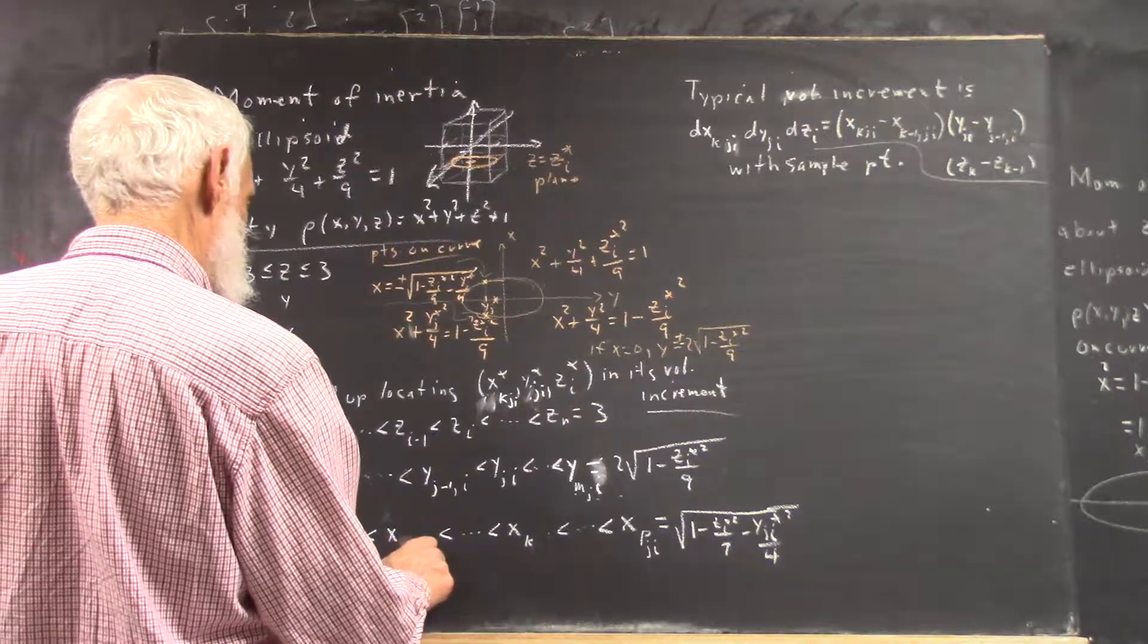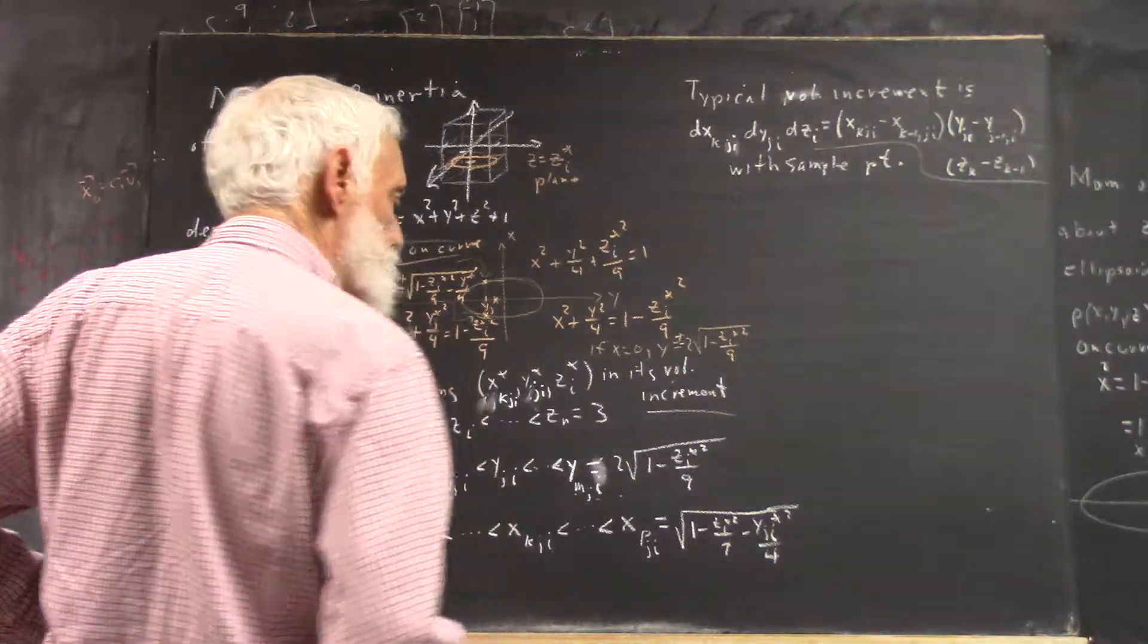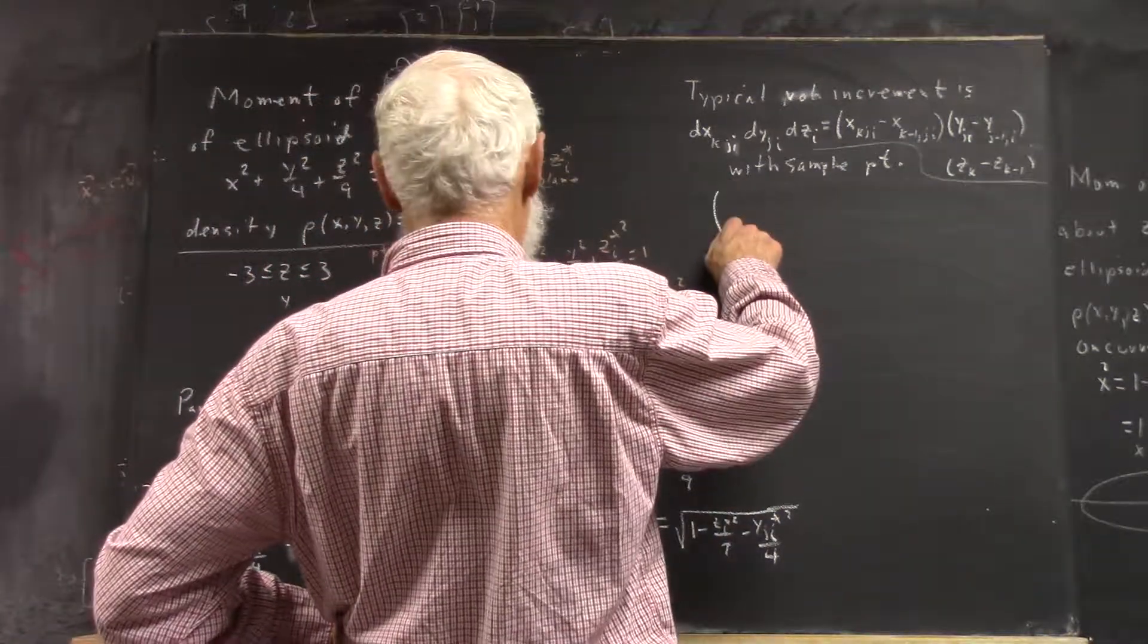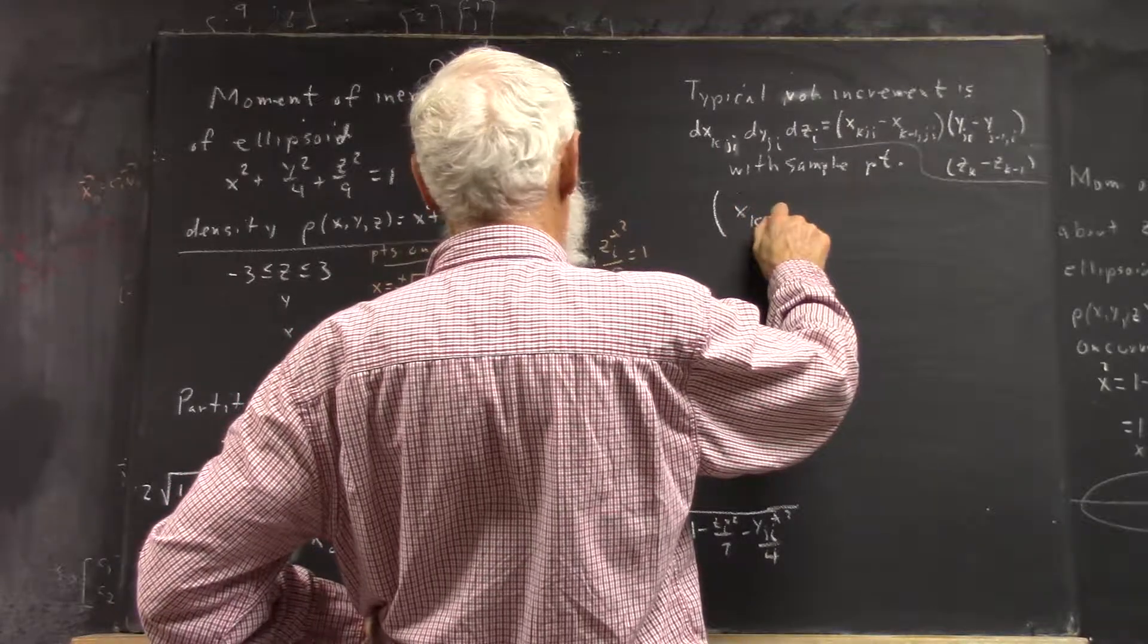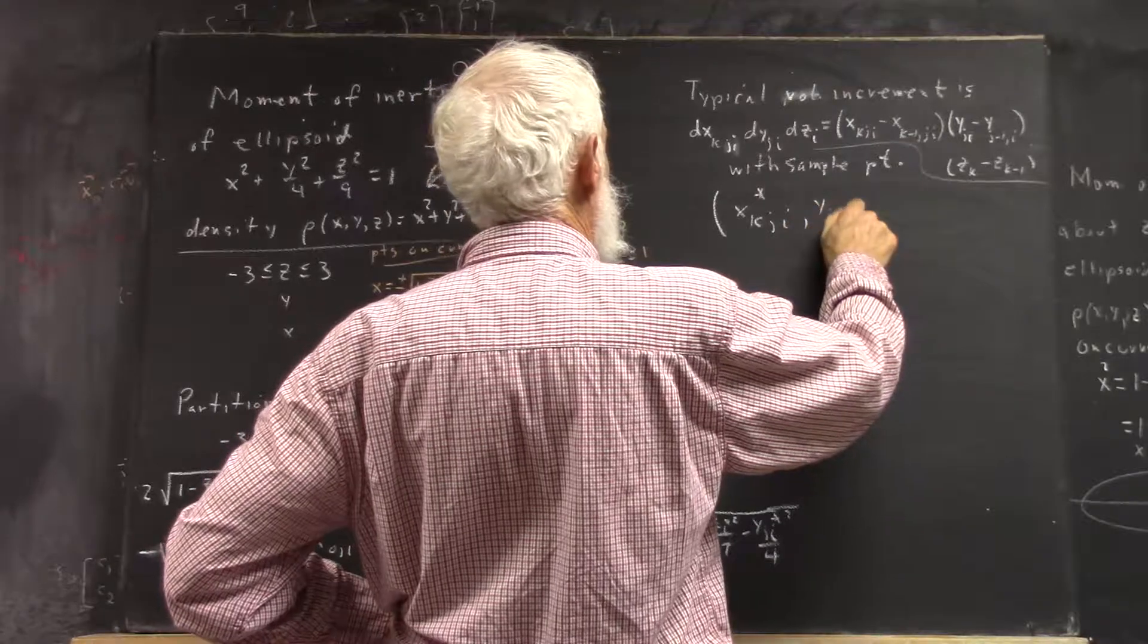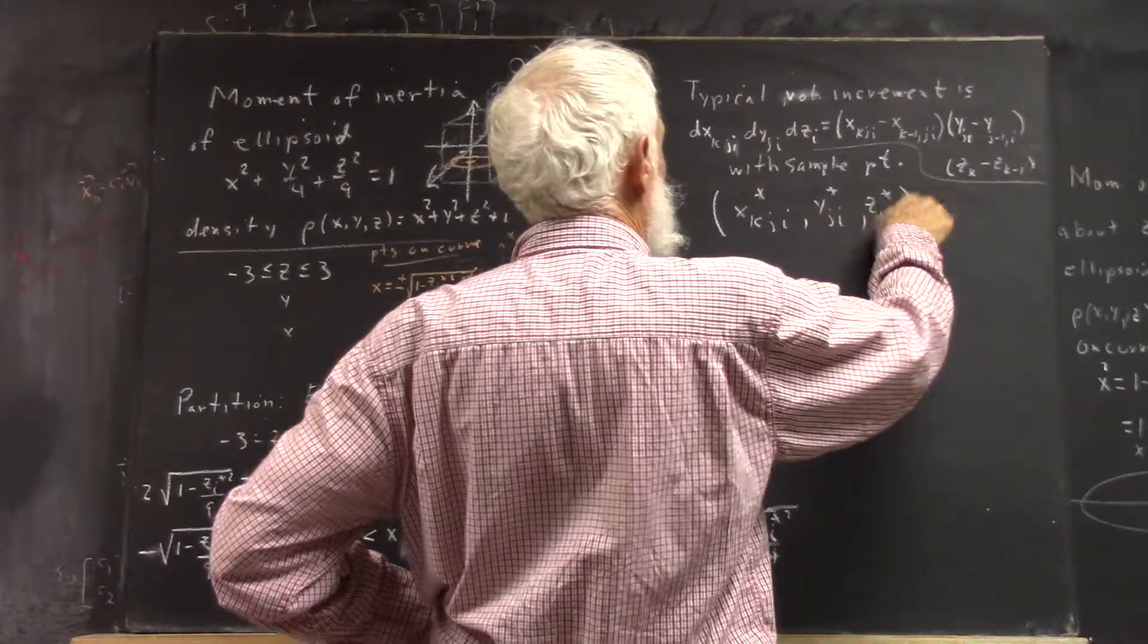So we need J-I, not I-J. And the sample point is then X K J-I star, Y J-I star, Z K star.